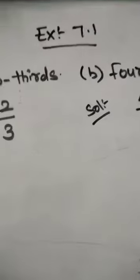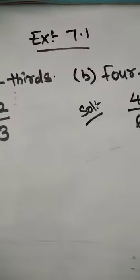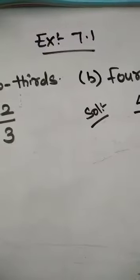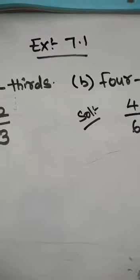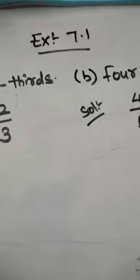Next one, you write it as your homework — you try it. C is 2 fifths, D is 5 tenths.